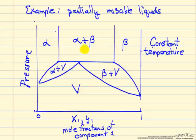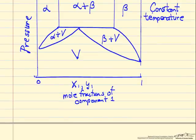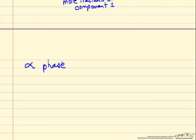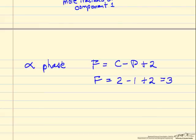If we pick a point within here, it just corresponds to what fraction is alpha, what fraction is beta at equilibrium. So let's look at a point in the alpha phase region. We want to apply the phase rule. In this case we have two components, component one and component two. We have one phase, and so the phase rule says we have three degrees of freedom.